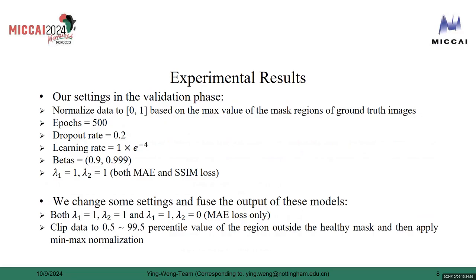We apply the Adam optimizer with initial learning rate 1e-4 and beta values 0.9 and 0.999. We set lambda 1 and lambda 2 to 1 in our loss function.